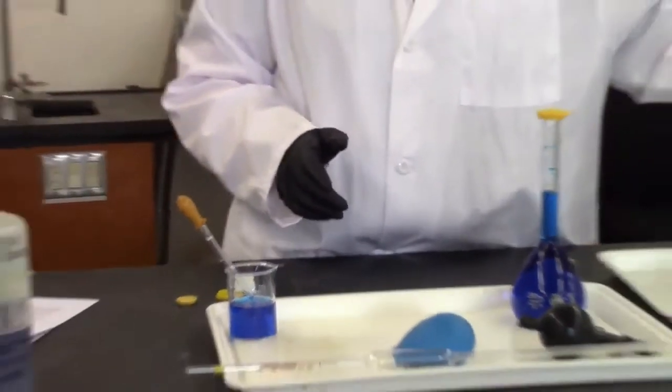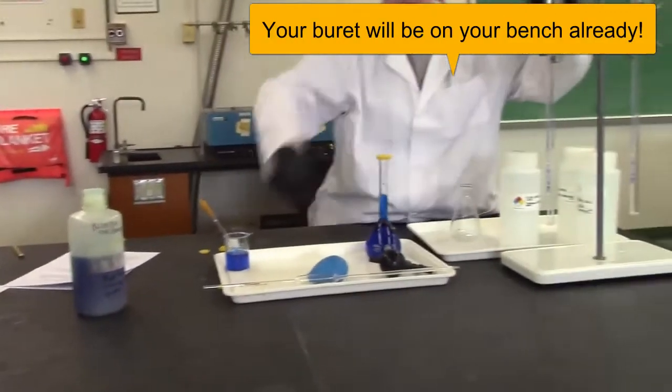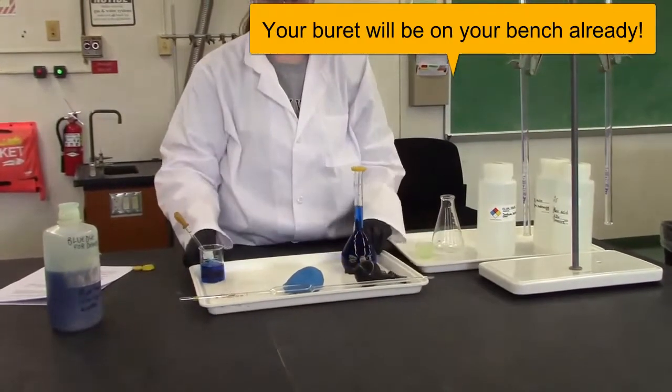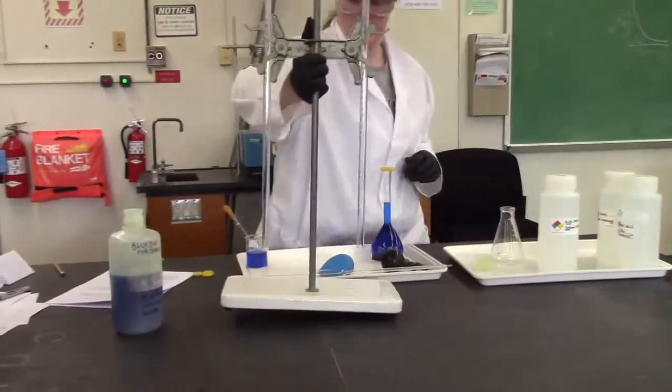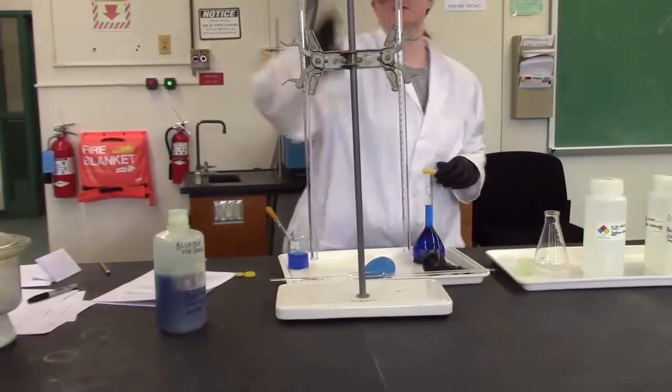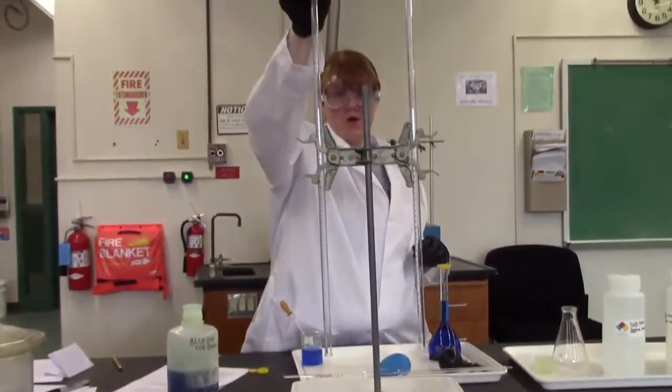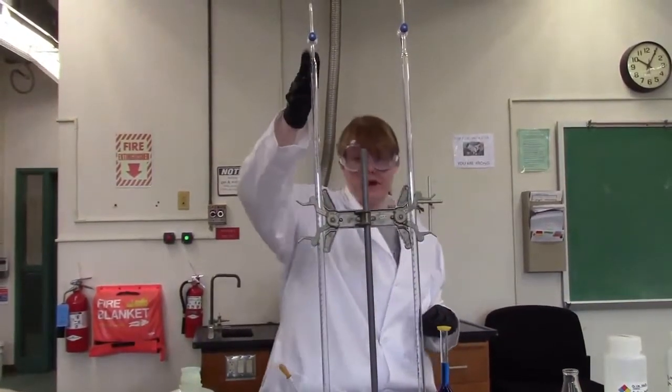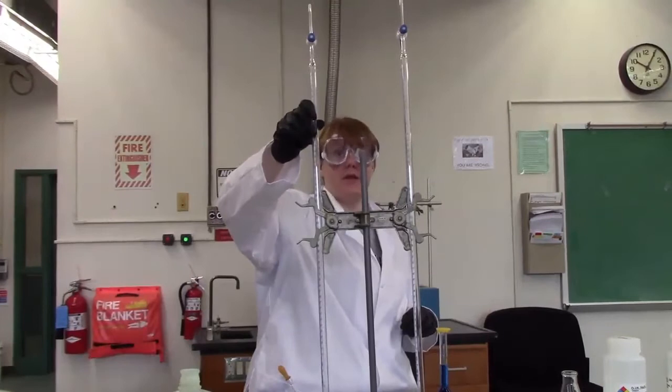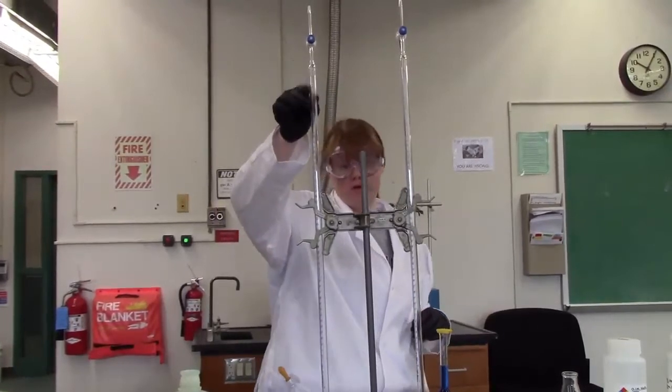The first thing we have to do is prepare a burette. The burettes are located on the side bench near where you usually pick up your chemicals. They're stored like this, upside down with the stopcock open. That's because when you finish you want to clean it and then leave it to dry thoroughly. If this is closed it doesn't dry very well.